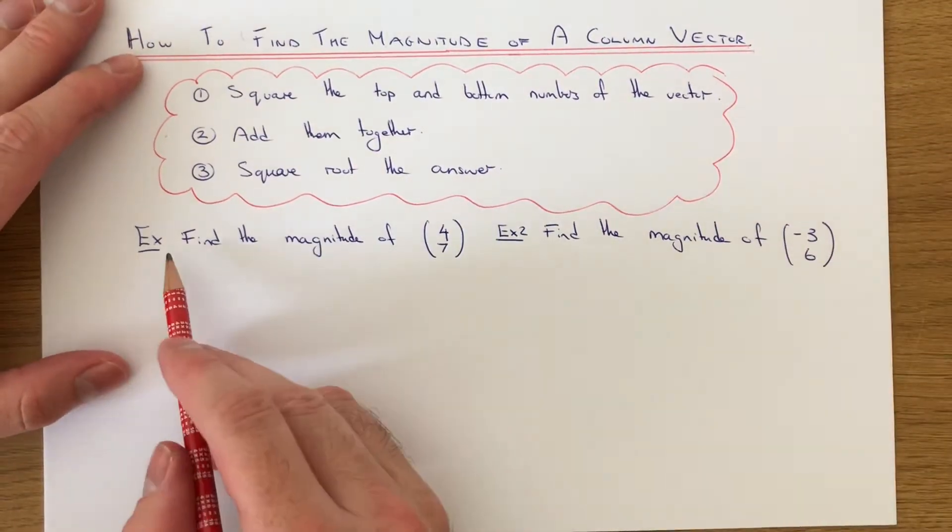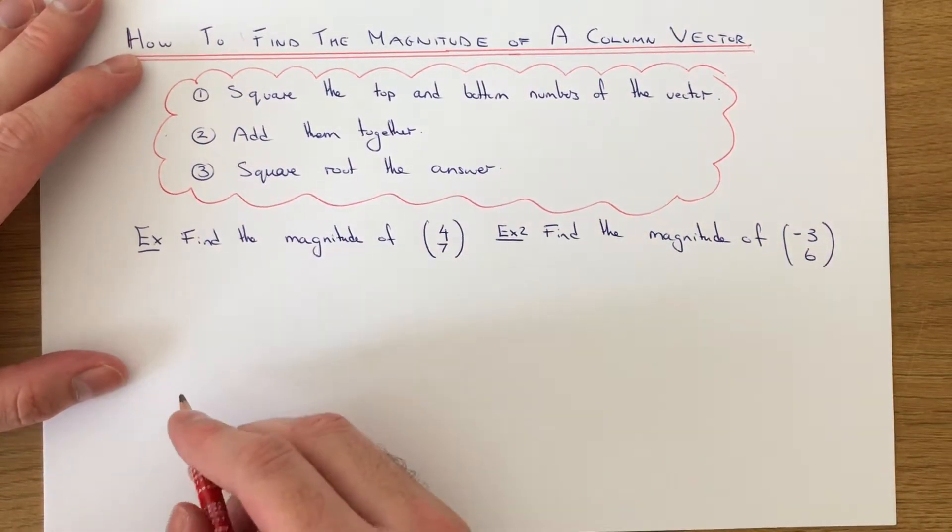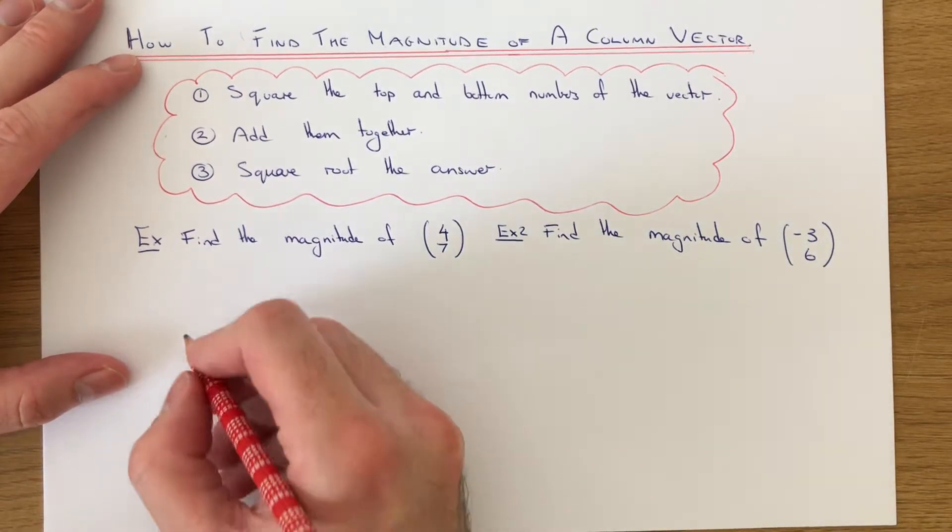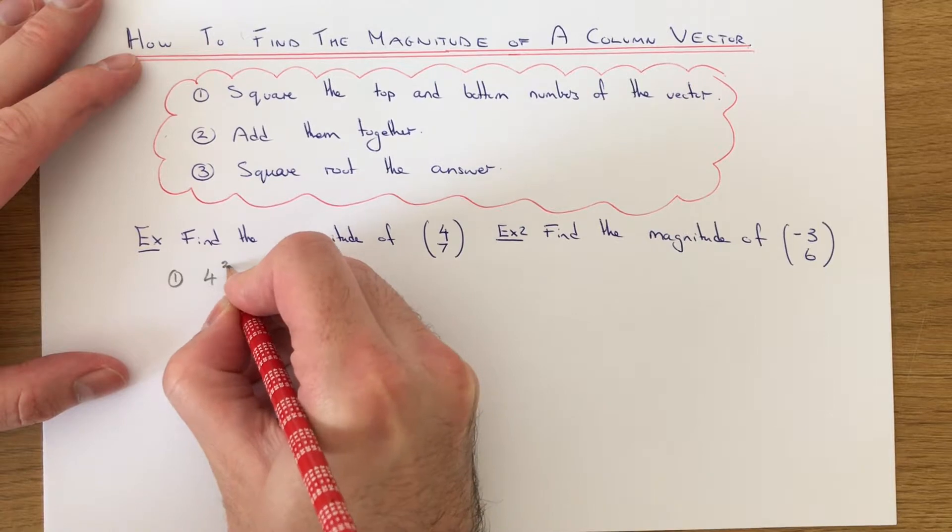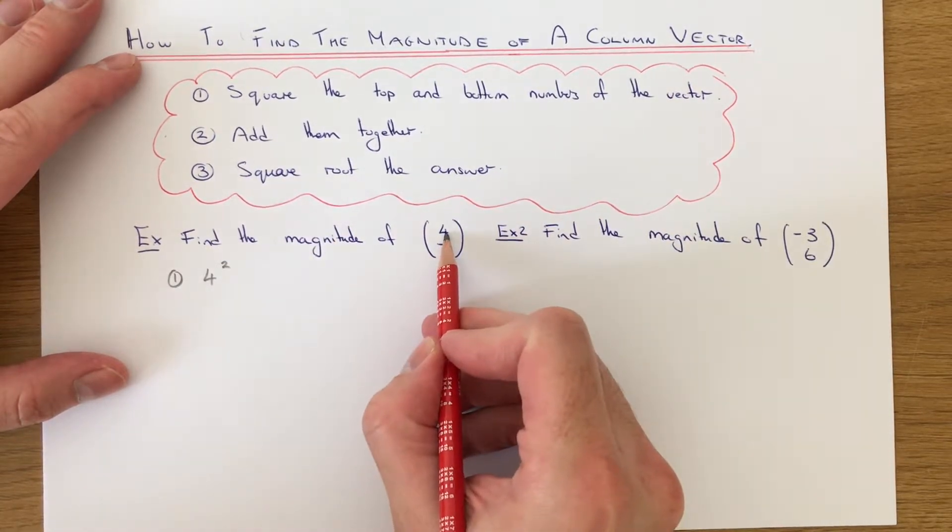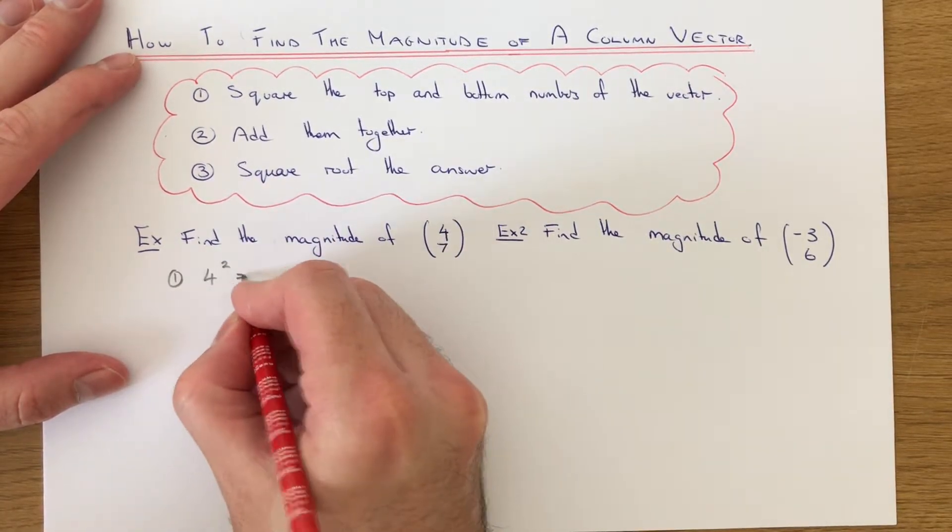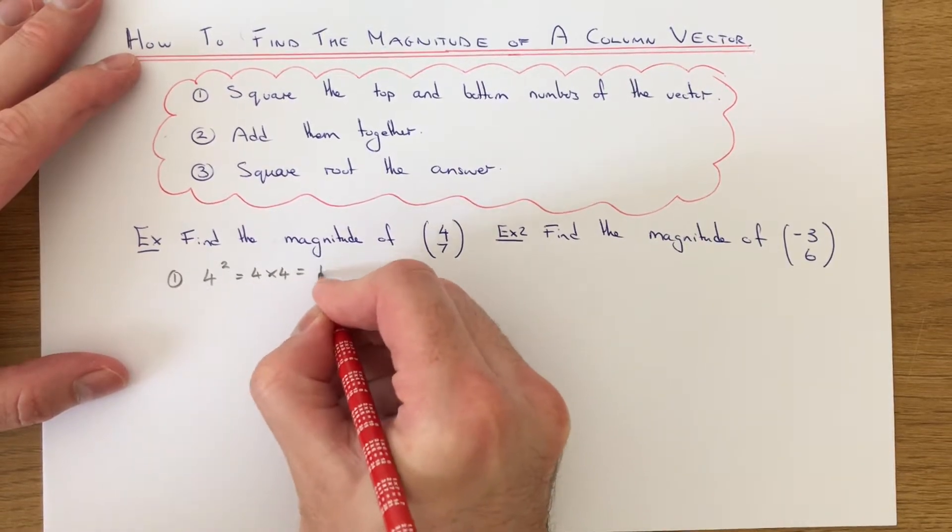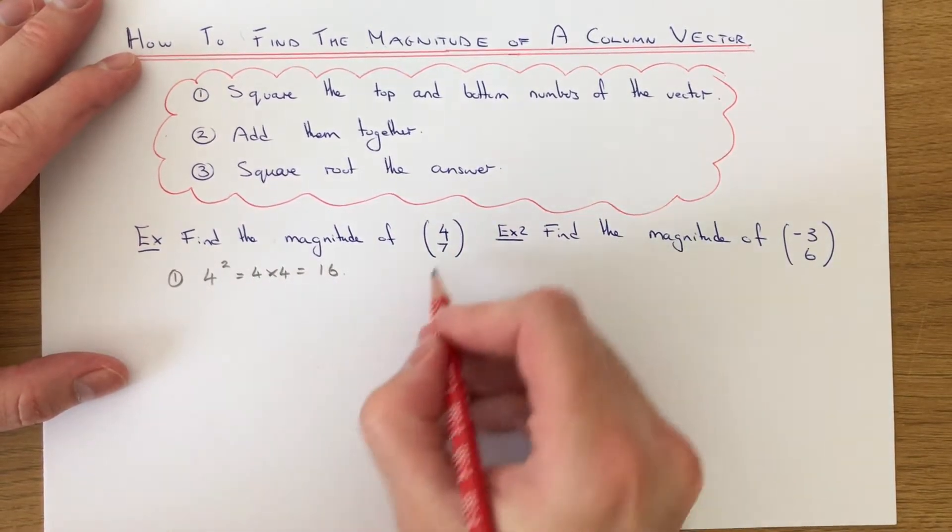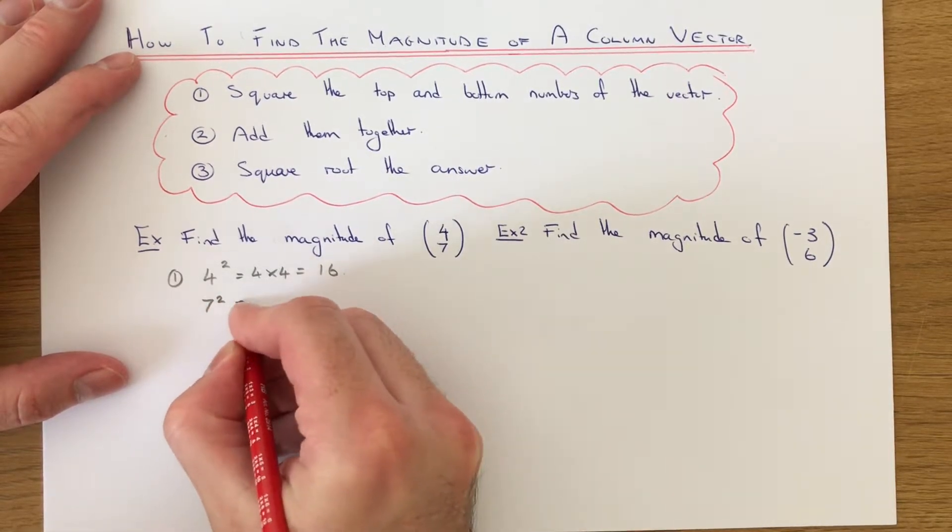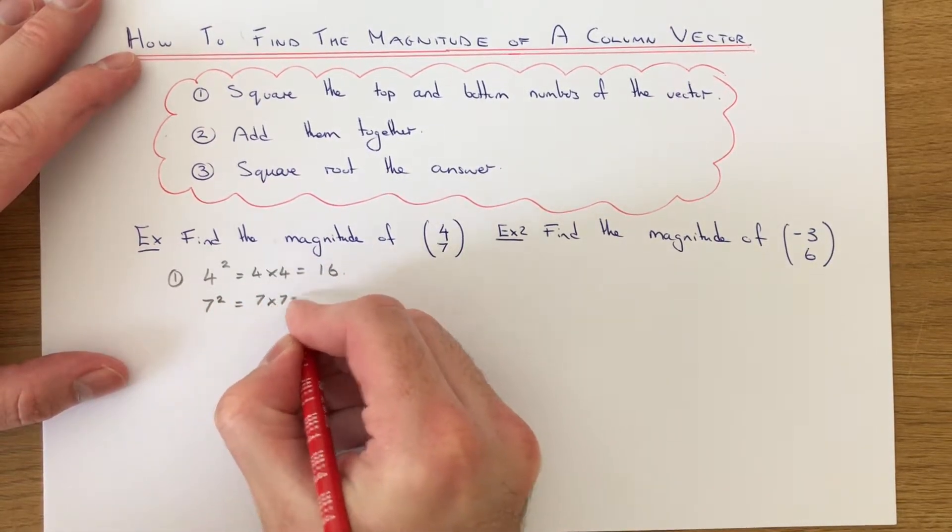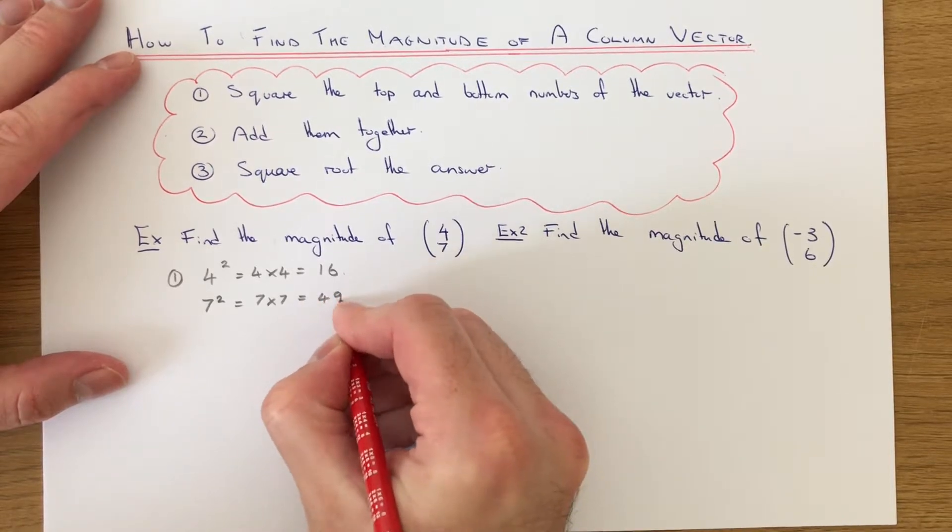Let's have a look at example 1. We've got to find the magnitude of (4, 7). Step 1: we need to square the two numbers in the vector. 4 squared is 4 times 4, which is 16. And 7 squared is 7 times 7, which is 49.